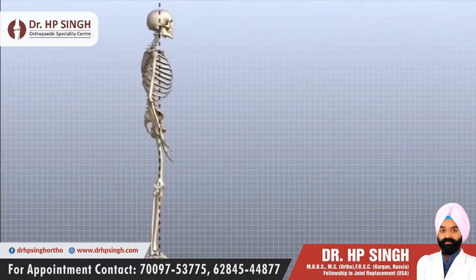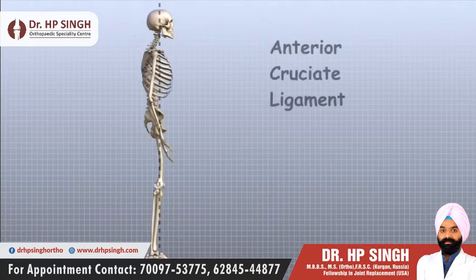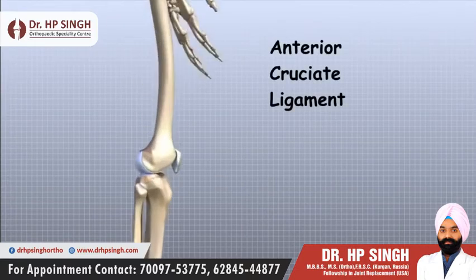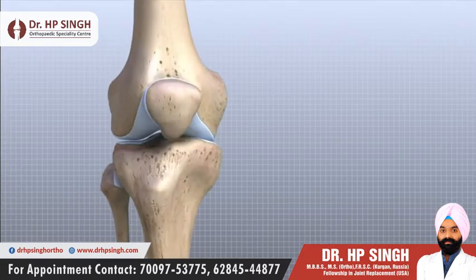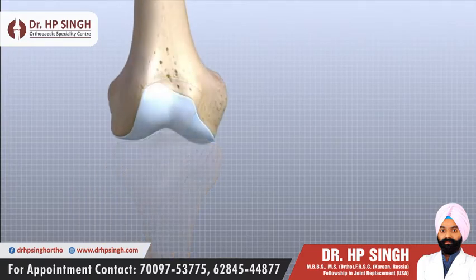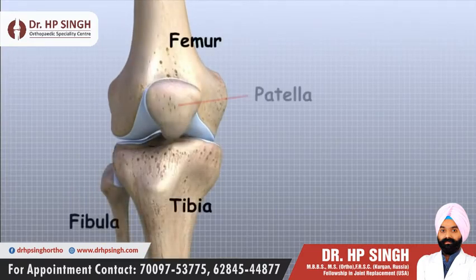The term anterior refers to the front of the knee, while the term posterior refers to the back of the knee, so the anterior cruciate ligament is in front of the posterior cruciate ligament. The knee is the joint where the femur and the tibia meet. The patella, or kneecap as it is commonly called, is made of bone and sits in front of the knee.